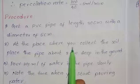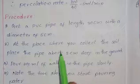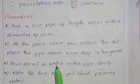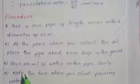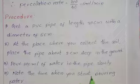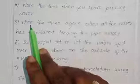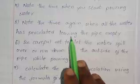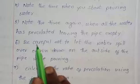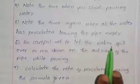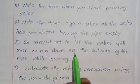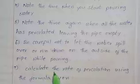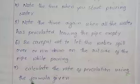Procedure to conduct the percolation test: Place the pipe about 2 cm deep in the ground. Pour 200 ml of water in the pipe slowly. Note the time when you start pouring water. Note the time again when all the water has percolated, leaving the pipe empty. Be careful not to let the water spill over or run down the outside of the pipe while pouring. Calculate the rate of percolation using the formula given.